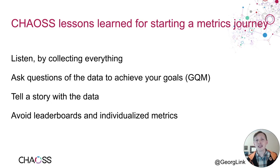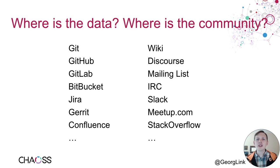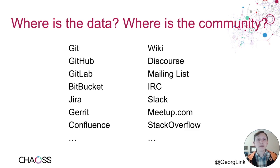Also, if we avoid leaderboards and individualized metrics, then we avoid gamification. Once we solve these organizational challenges, we may want to actually dig in and get the data. Where do we get the data from? Think about where your community is, where your project is active. Probably there's a code repository — Git usually, maybe on GitHub or GitLab. Maybe you're using an issue tracker like Jira, a wiki, a Discourse forum, a mailing list, instant messaging through IRC or Slack, or meeting offline through Meetup.com. Wherever your project is active, collect that data.